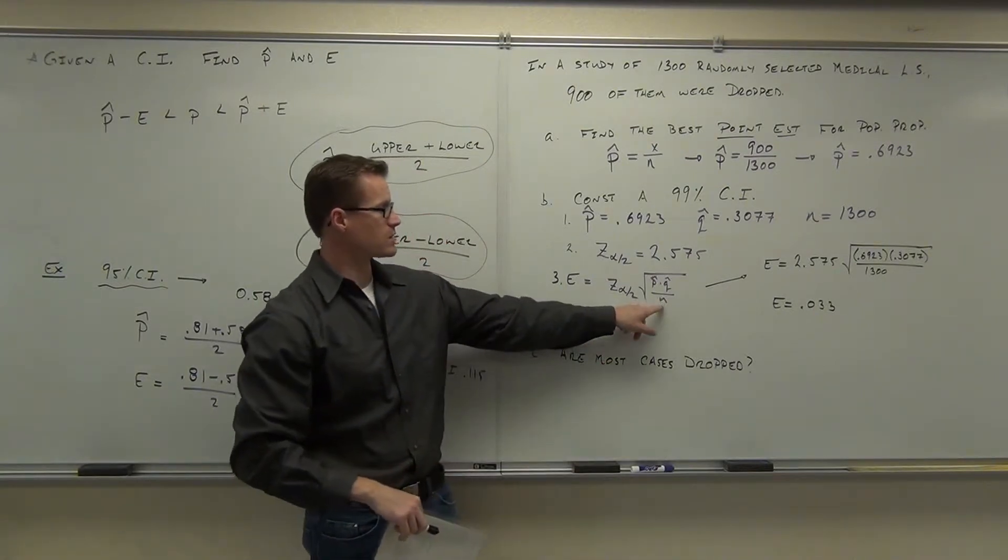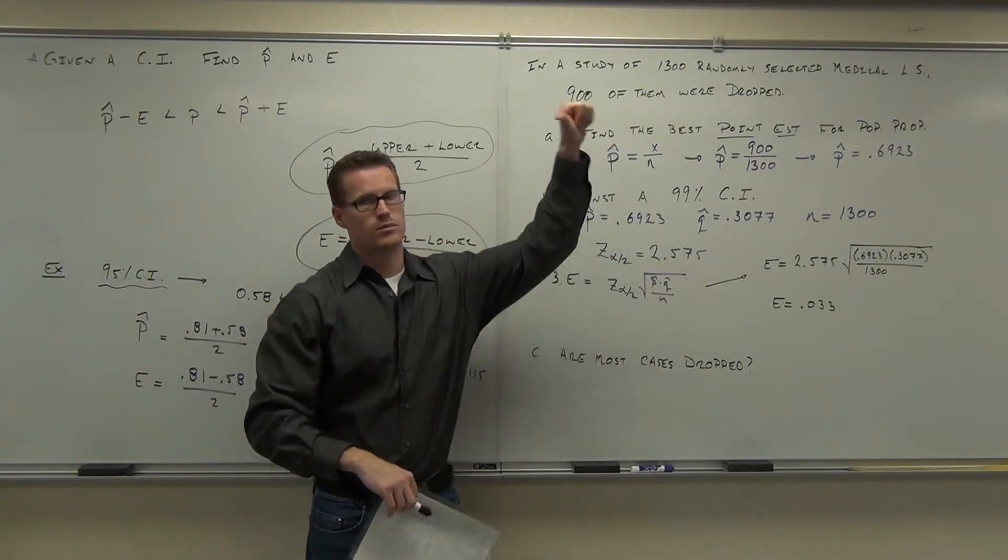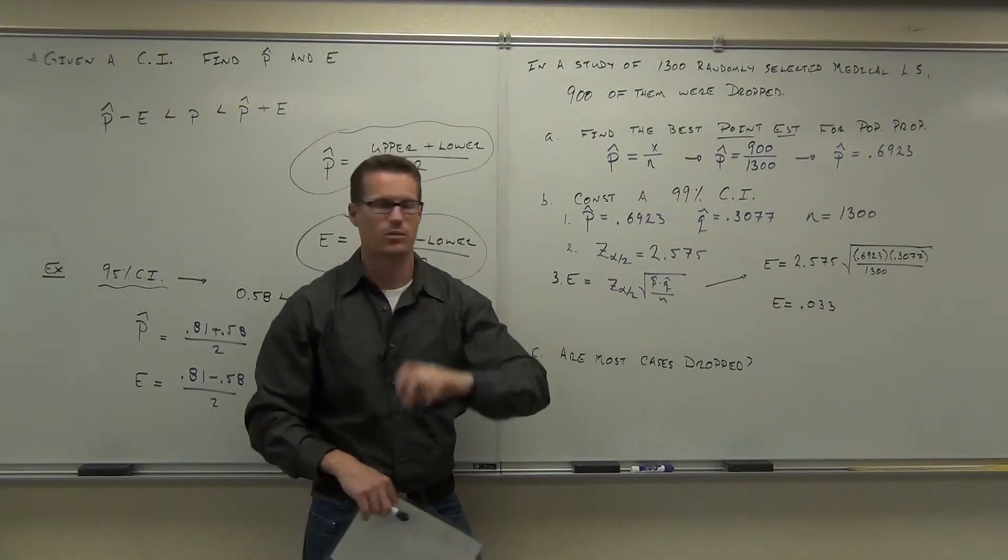Remember that as your n increases, this whole thing goes down. It goes way down. So we're getting a smaller, smaller margin of error.